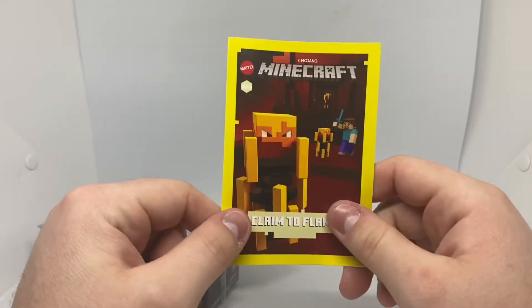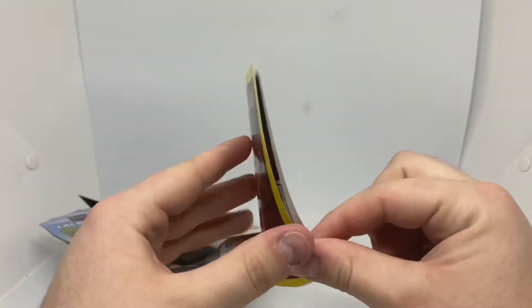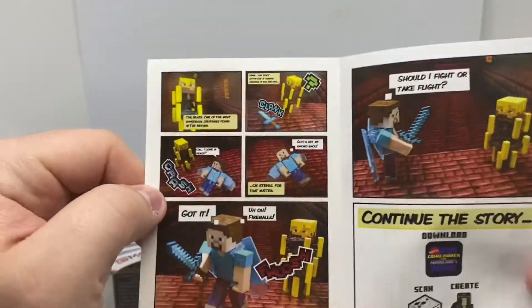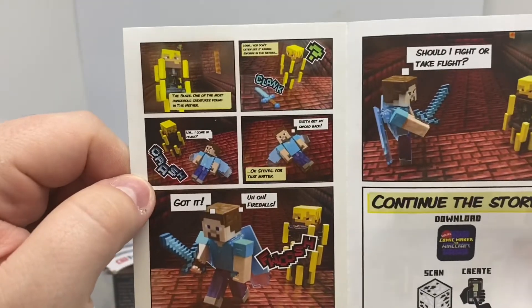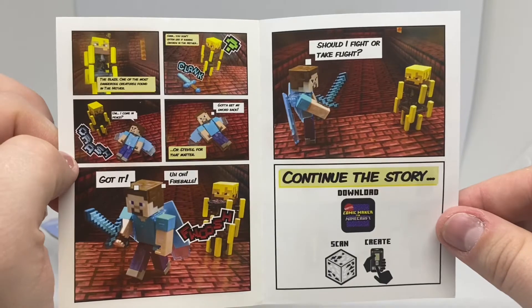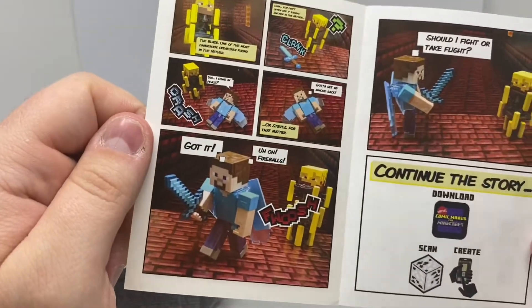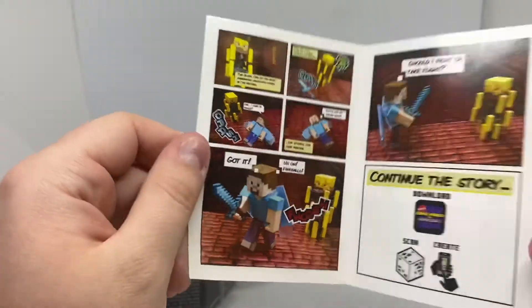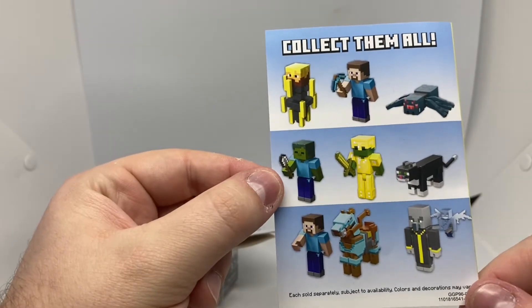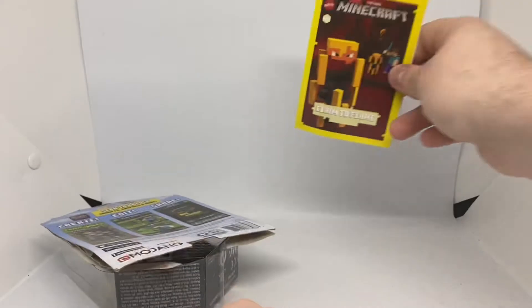So he does come with the comic, and he is number 20, Claim to Flame. So I won't read it out, but you guys get the idea. Pretty cool, so you do have Steve with his Elytra and diamond sword, which is pretty sweet. I like that, and the other figures in the wave. I believe I only have some of them.